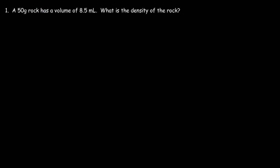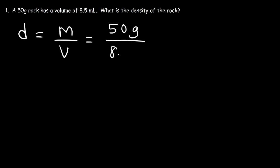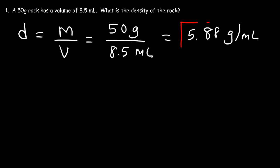Feel free to pause the video if you want to work on these problems. Density is equal to mass divided by volume. So the mass of the rock is 50 grams and the volume is 8.5 milliliters. So we just need to divide the two values: 50 divided by 8.5 is 5.88 grams per milliliter. So that's the density of the rock.